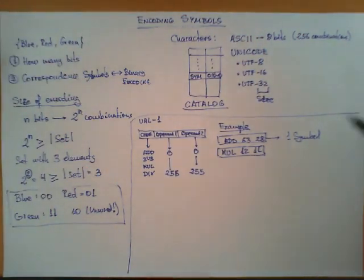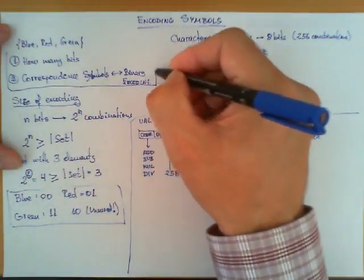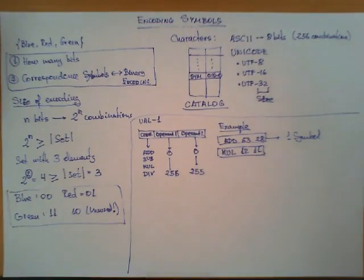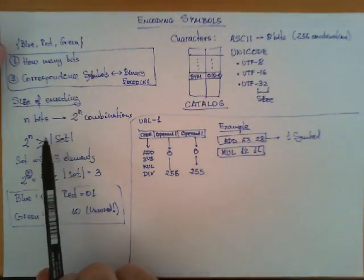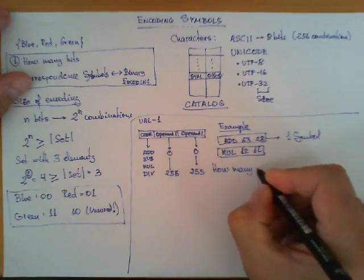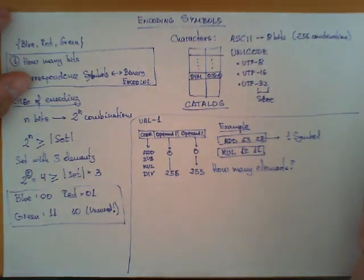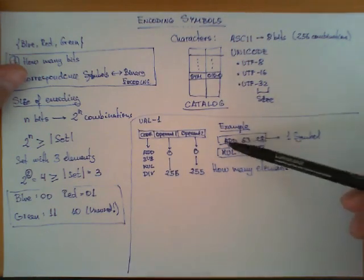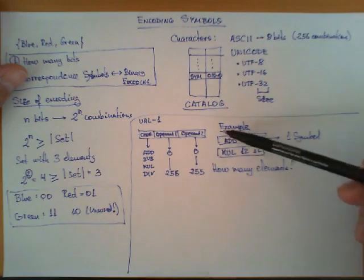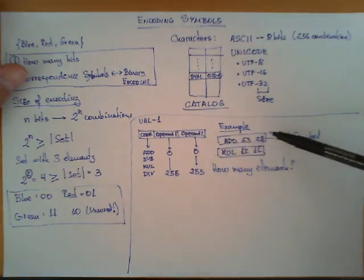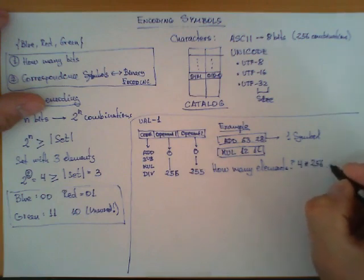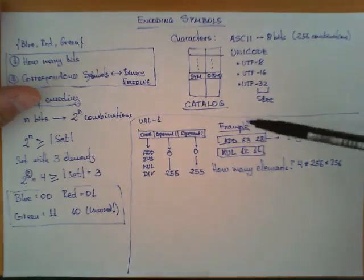Now let's try to encode this set. We first need to decide how many bits are we going to use to encode this, and then the correspondence between symbols and binary encodings. In order to decide how many bits, I first need to know how many elements are in my set. Let's do a quick calculation. In all my symbols, I can have four possible values here. Each one of them can have 256 possible values here between 0 and 255, and each of these combinations can have another number between 0 and 256.